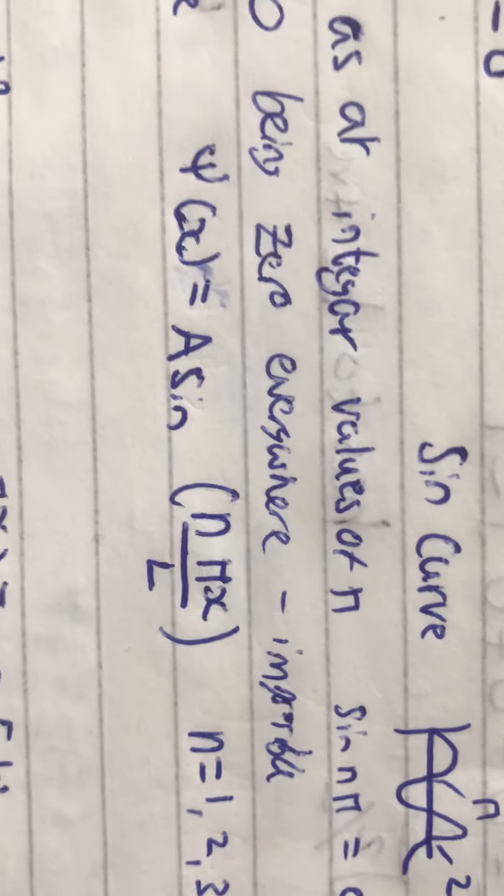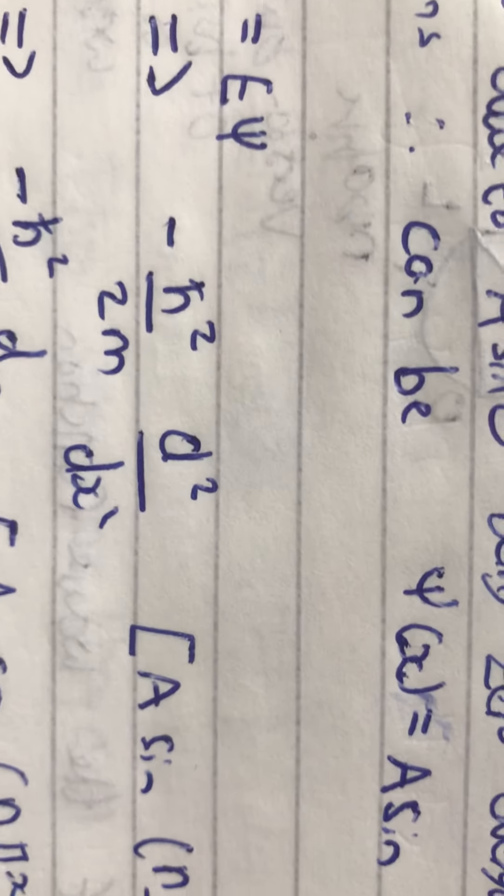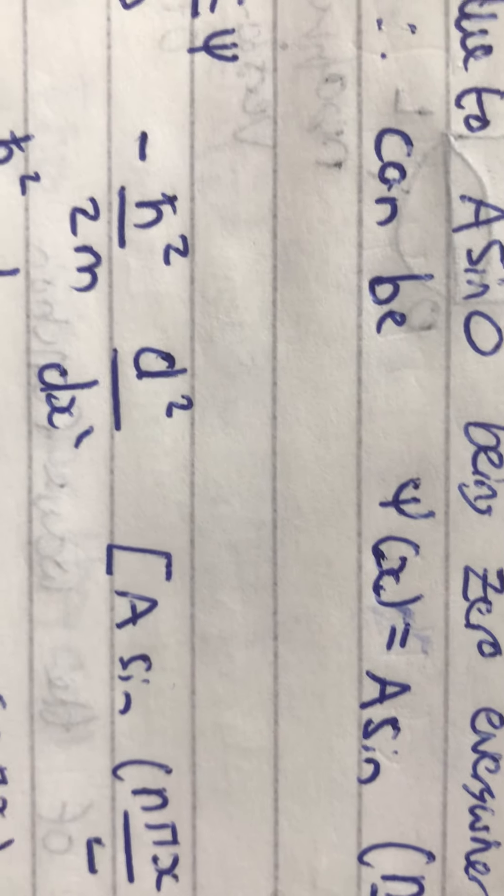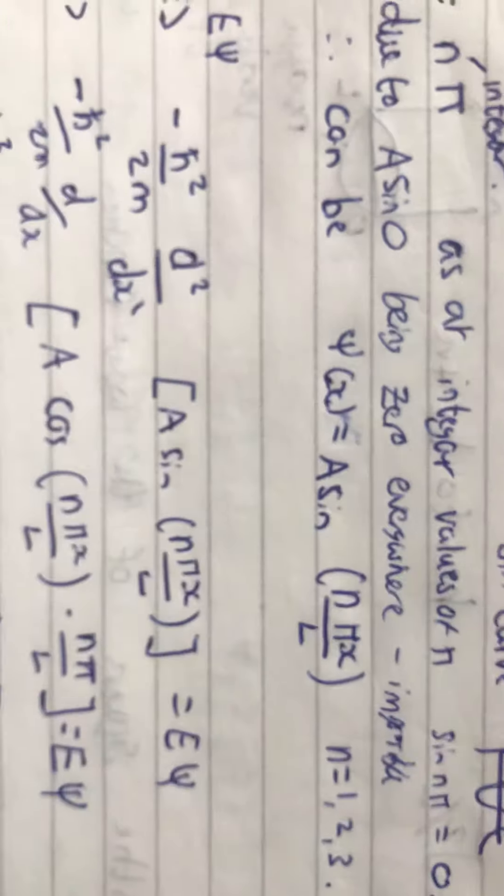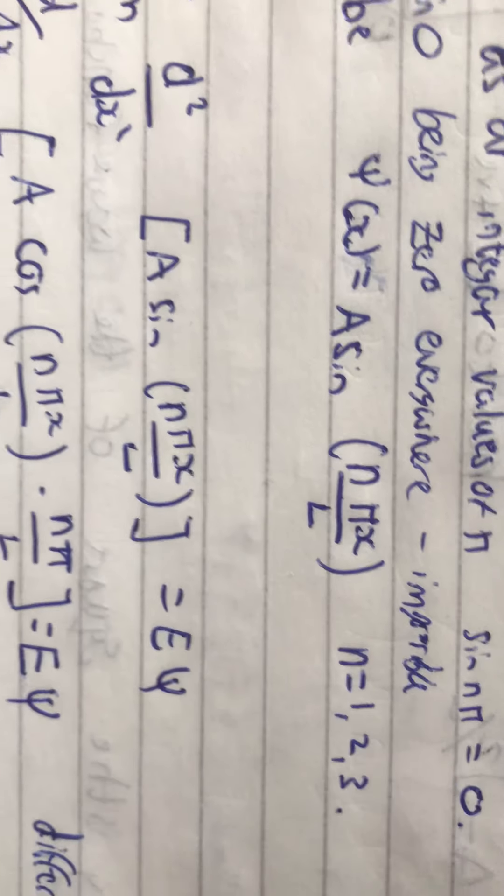So, we've worked out what the wave function is, which is what we wanted to do up here, so we could plug it in to this equation. So, we can plug that in now. So, we've got minus ℏ squared over 2m multiplied by the second derivative of this,